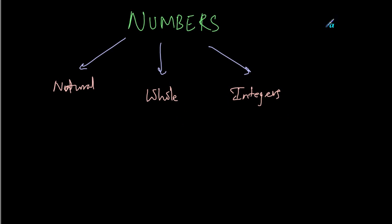So, what are natural numbers? Natural numbers are those positive numbers that start from 1 and go on till infinity.